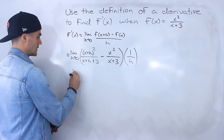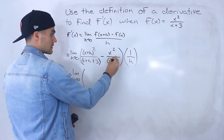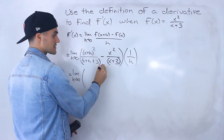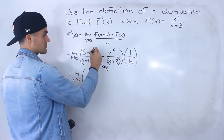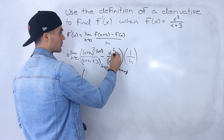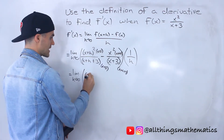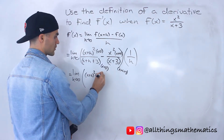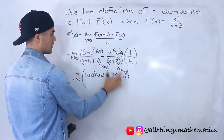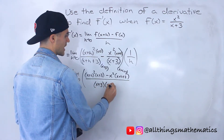So let's try to do that. We have the limit as h approaches 0. We've got to combine these into one fraction — notice these are different terms, so the common denominator would be x plus h plus 3 times x plus 3. So we're multiplying the first fraction's numerator by x plus 3, and the second fraction's numerator by x plus h plus 3. So we would have x plus h squared times x plus 3 minus x squared times x plus h plus 3, all over x plus 3 times x plus h plus 3.